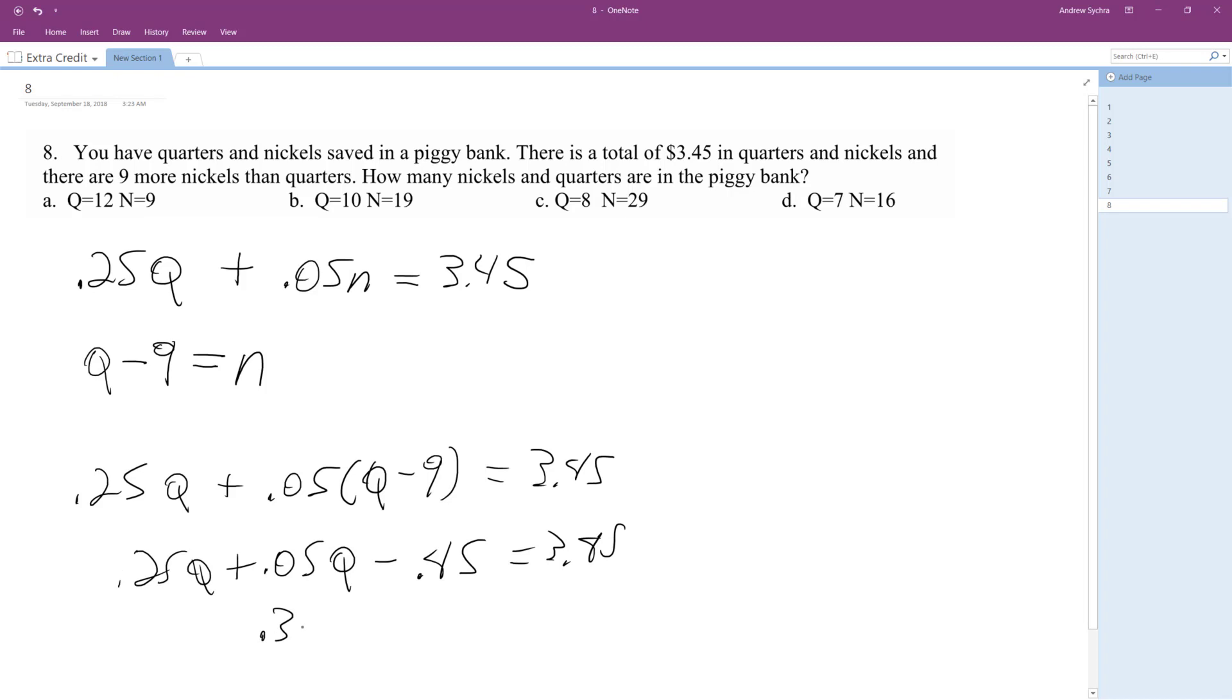All right, so we get 0.30Q. Then add 0.45, equals 3.90.